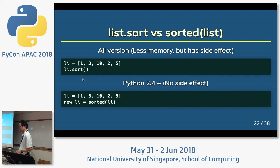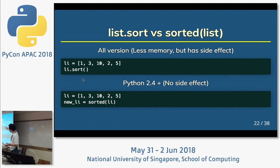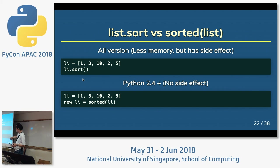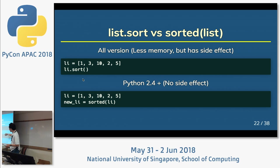List.sort versus sorted list. The top uses list.sort — less memory, but has a side effect. The bottom uses sorted — no side effect. I like sorted.